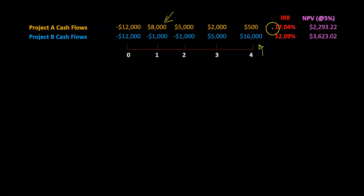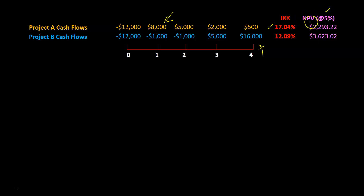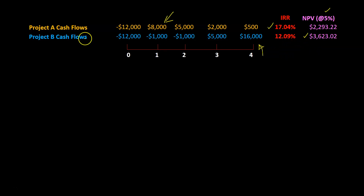If you calculate the IRR of these two projects, it turns out that the IRR of A is 17%, which is more than what project B is yielding, which is 12%. However, if your discount rate is 5% and you calculate the NPV of these two projects, it turns out that the NPV of project B is higher. So here lies the problem — there is an inconsistency between what NPV is telling you to do, which is go with project B, whereas IRR is telling you to go with project A.